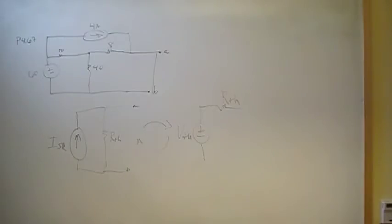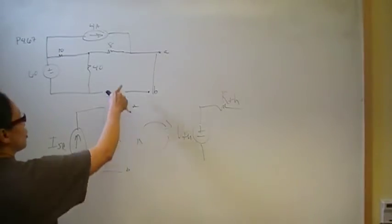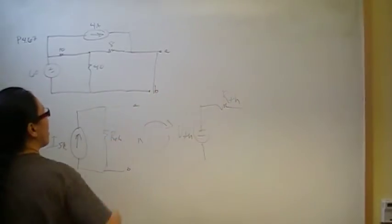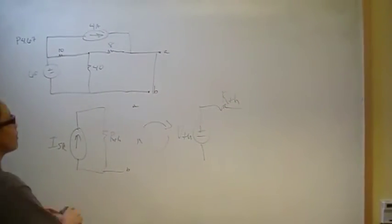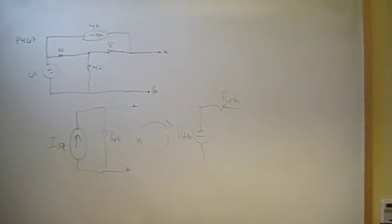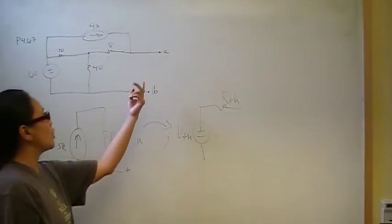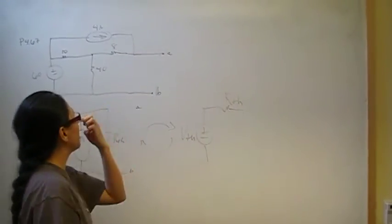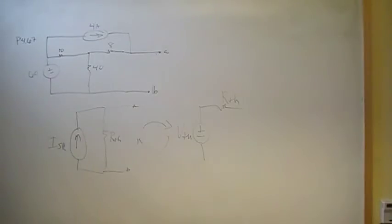The strategy I'm going to use is: first, I'm going to find the short circuit current through the load by shorting the load — that gives me I short circuit. Then I'm going to disable all the independent power sources to find the resistance seen by the load, which gives me R_Thevenin. That's how I'll find my Norton Equivalent Circuit.